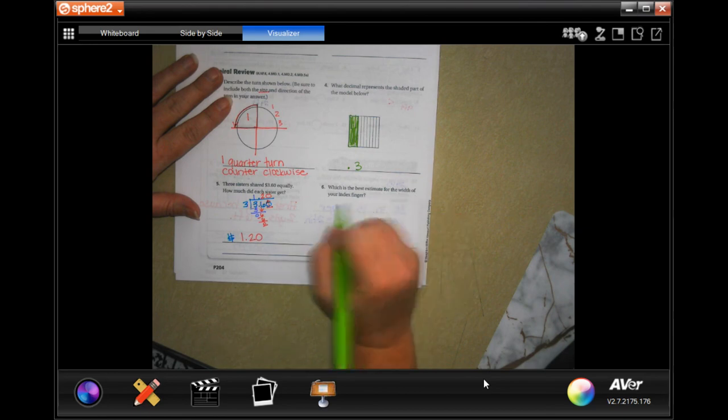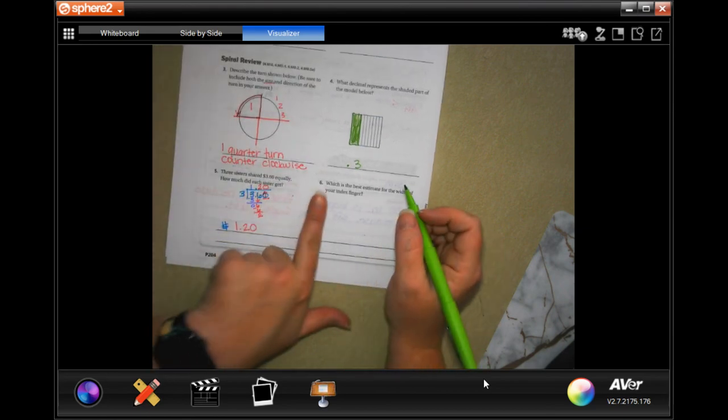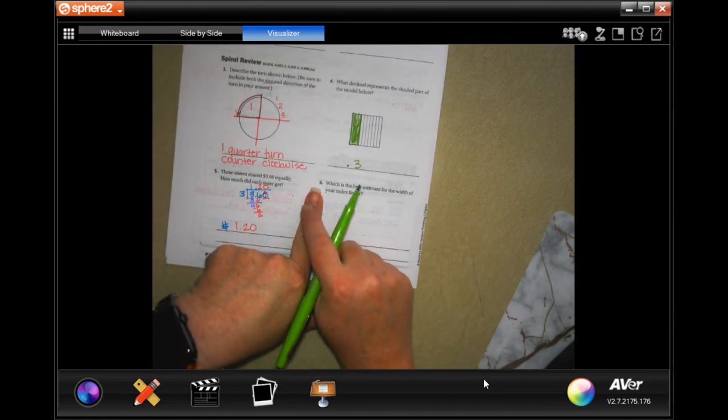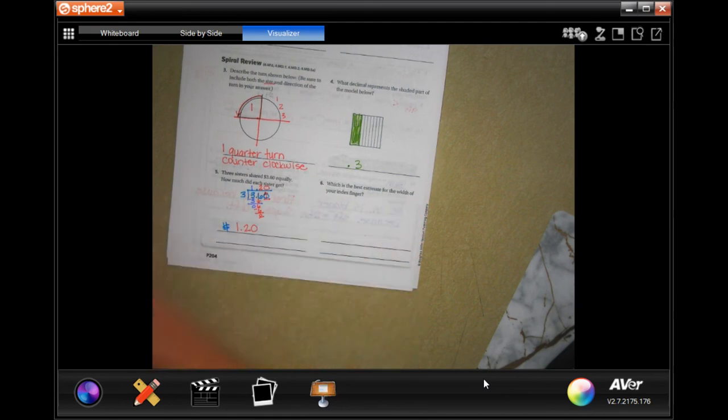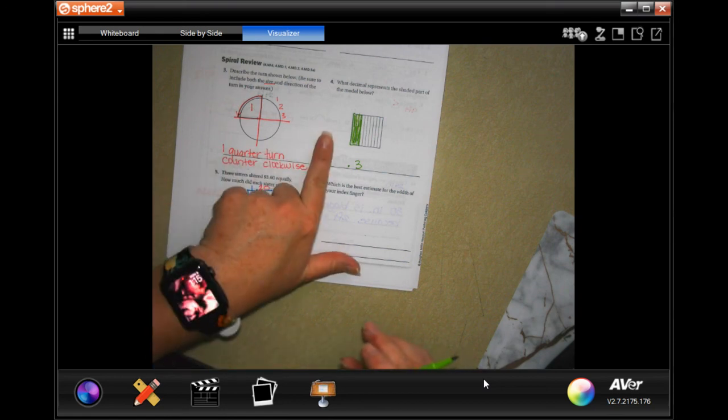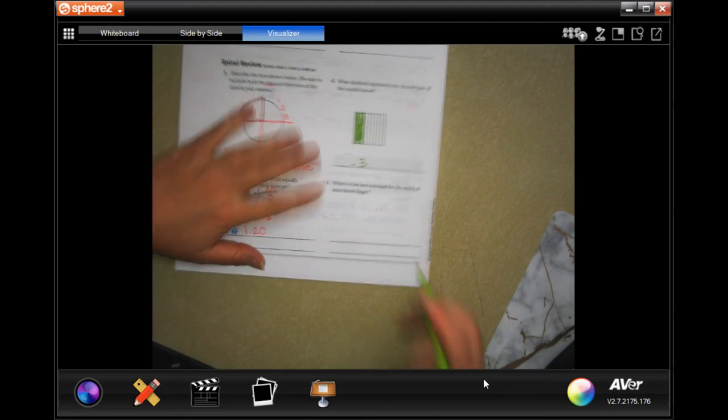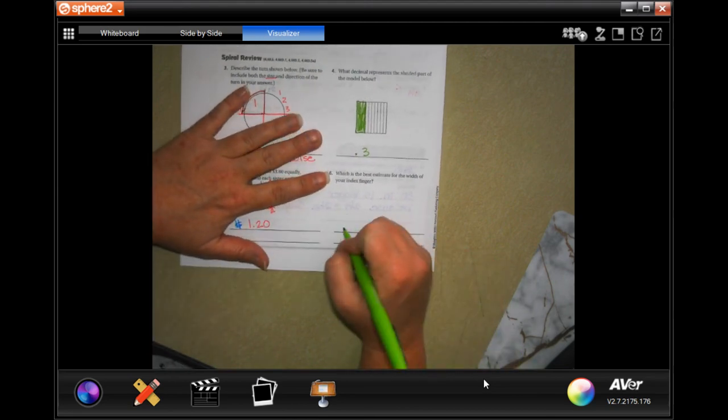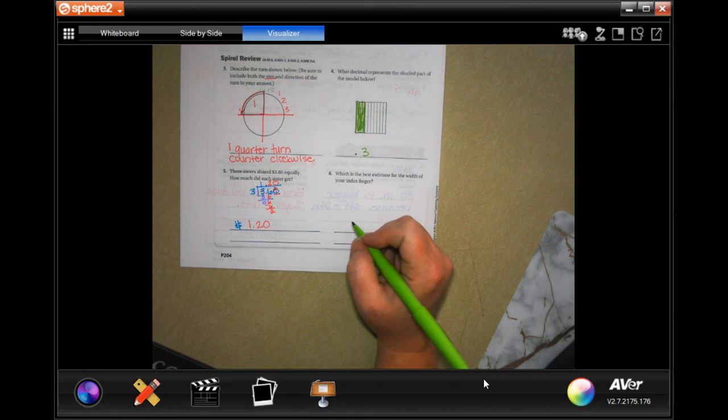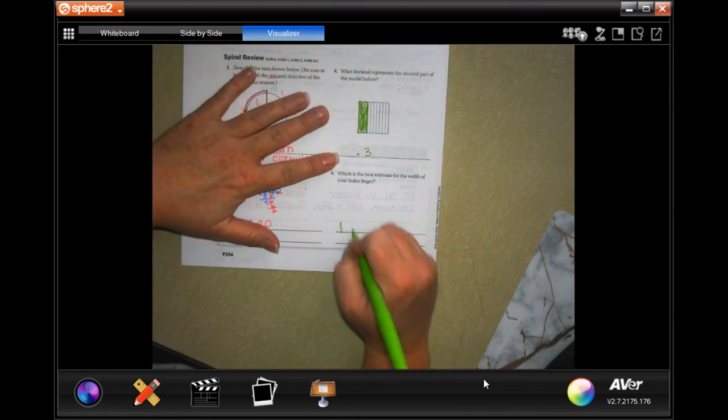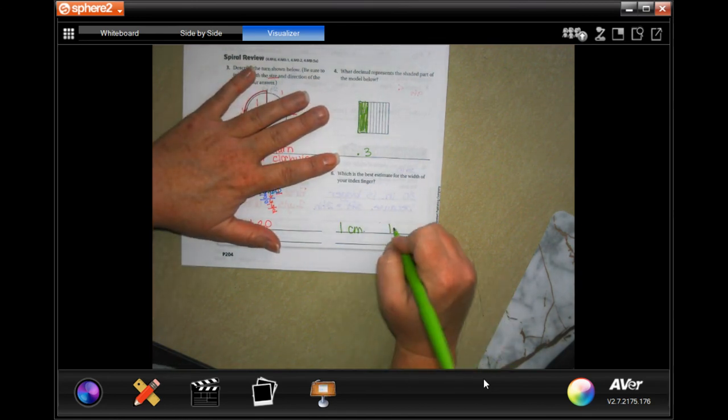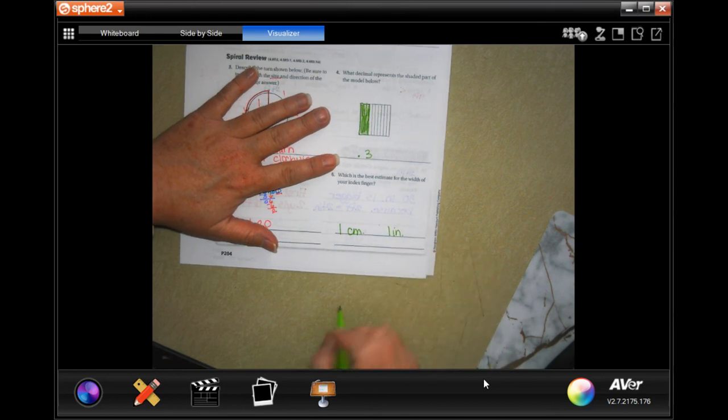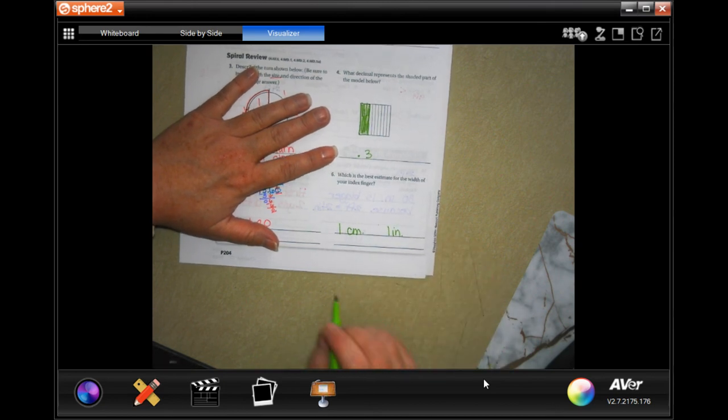Which is the best estimate for the width of your index finger? Well, your index finger is not very wide, right? So we could go 1 centimeter. If you're a grown-up, you could even go an inch. So, let's stick with 1 centimeter. You could also go with 1 inch. That's probably about it, though.